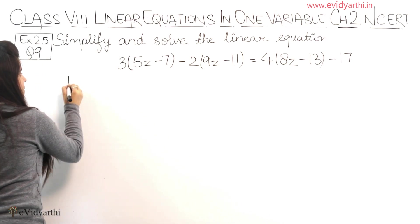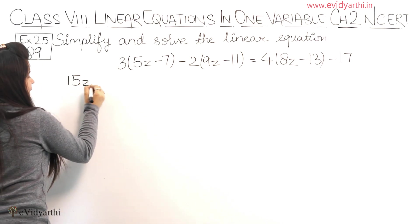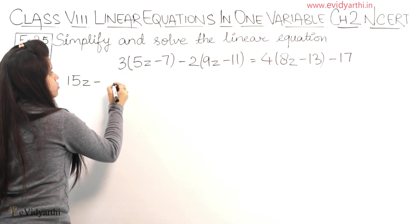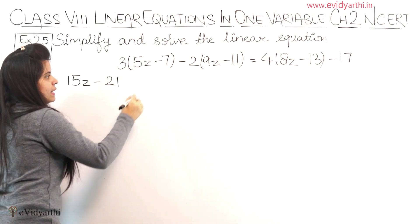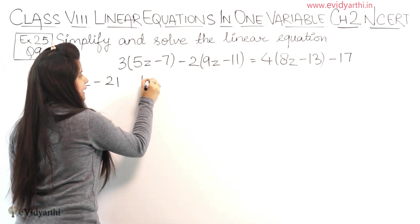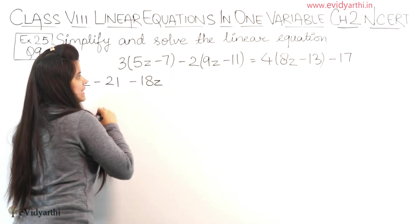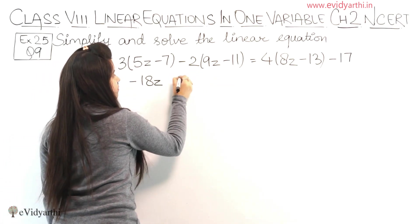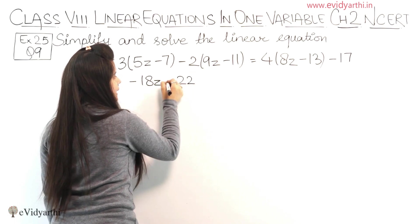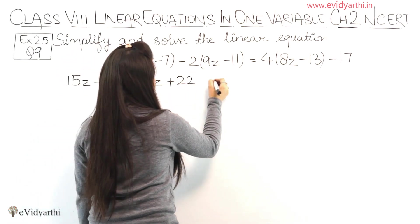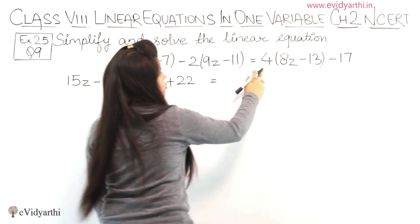Now 3 into 5 is 15z, minus 3 into 7 is 21. Then 2 into 9 is 18z, and minus plus becomes minus. Then 2 into 11 is 22, minus minus becomes plus. And then equals to 4 into 8.